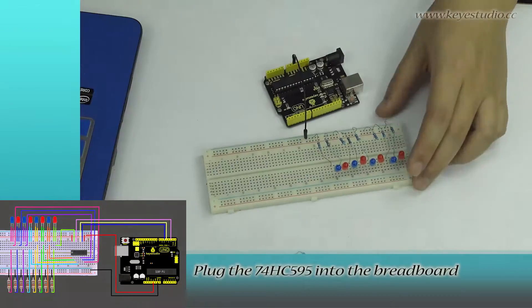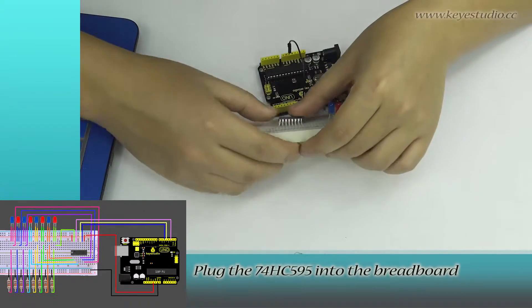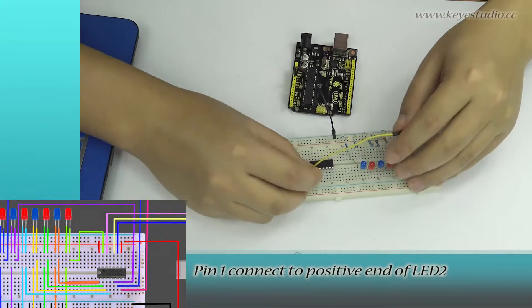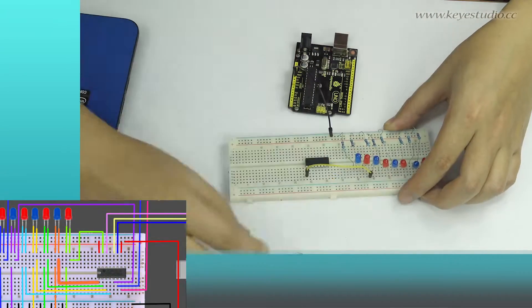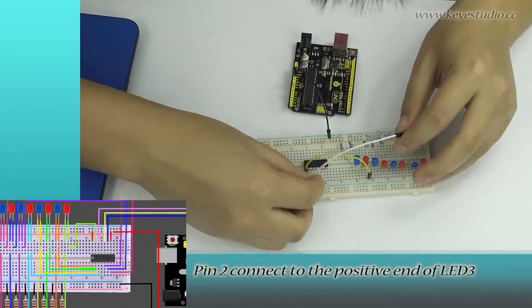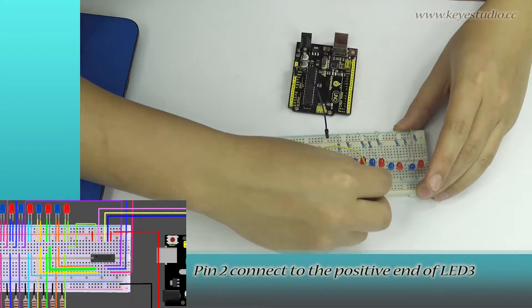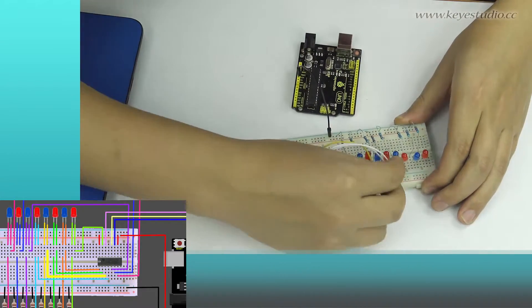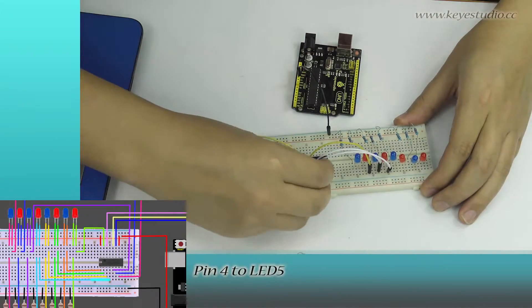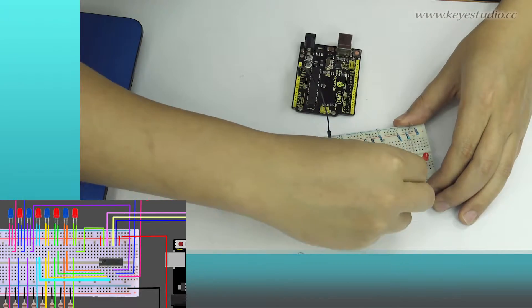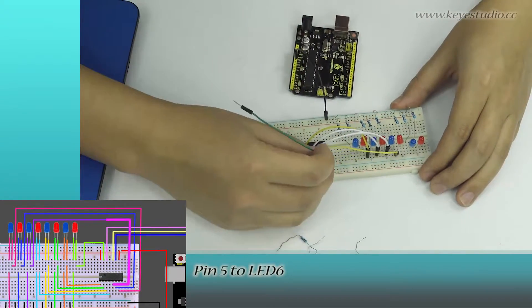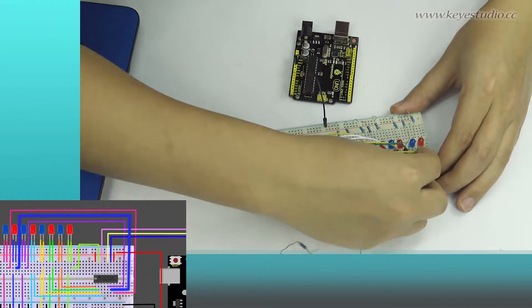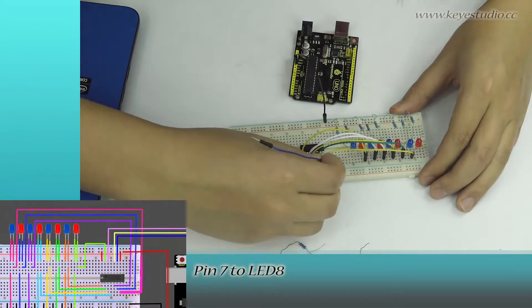Plug the 74HC-595 into the breadboard. Pin 1 connects to the positive end of LED 2. Pin 2 connects to the positive end of LED 3. Pin 3 to LED 4. Pin 4 to LED 5. Pin 5 to LED 6. Pin 6 to LED 7. Pin 7 to LED 8.